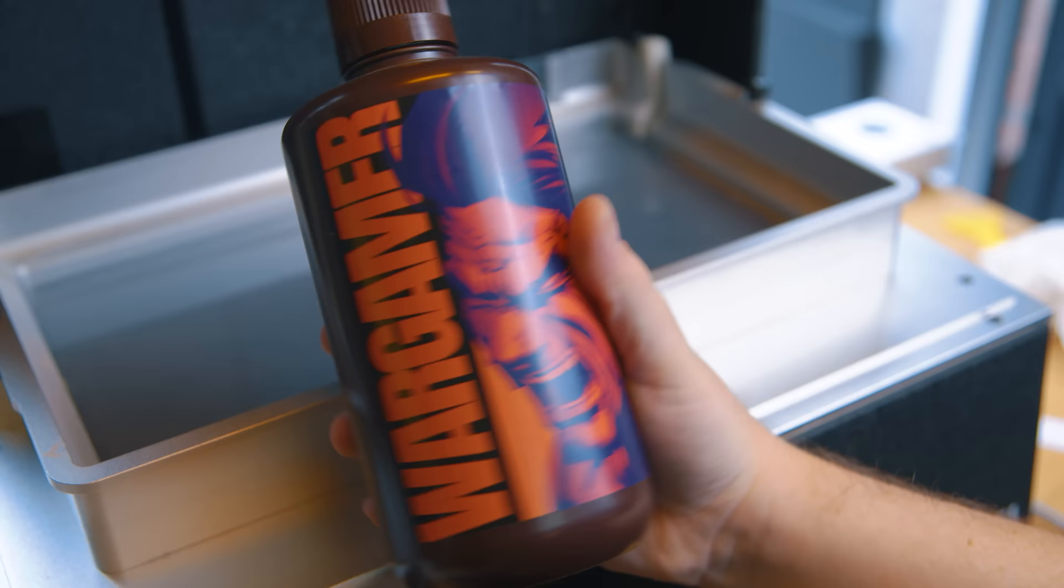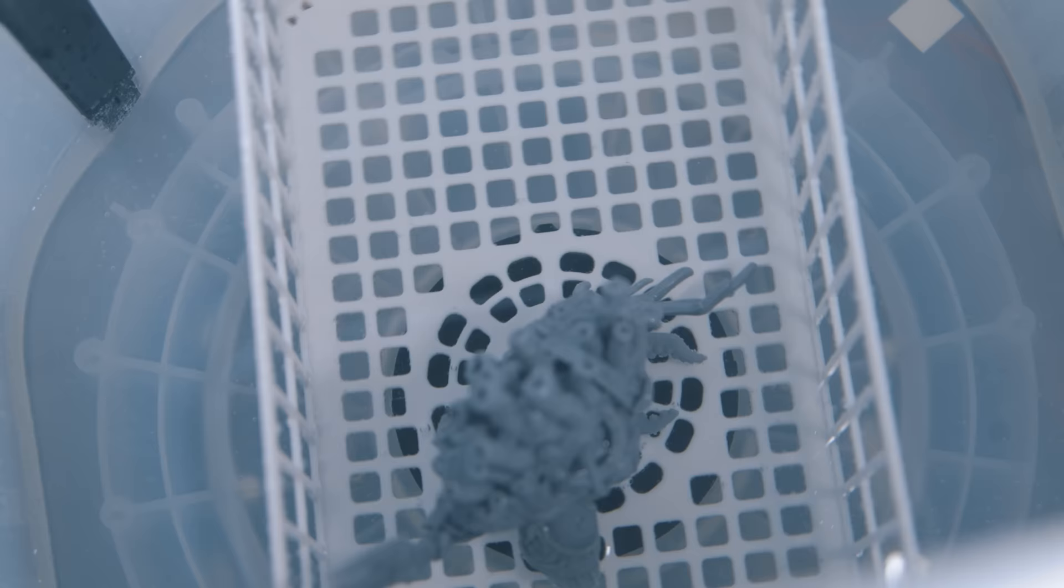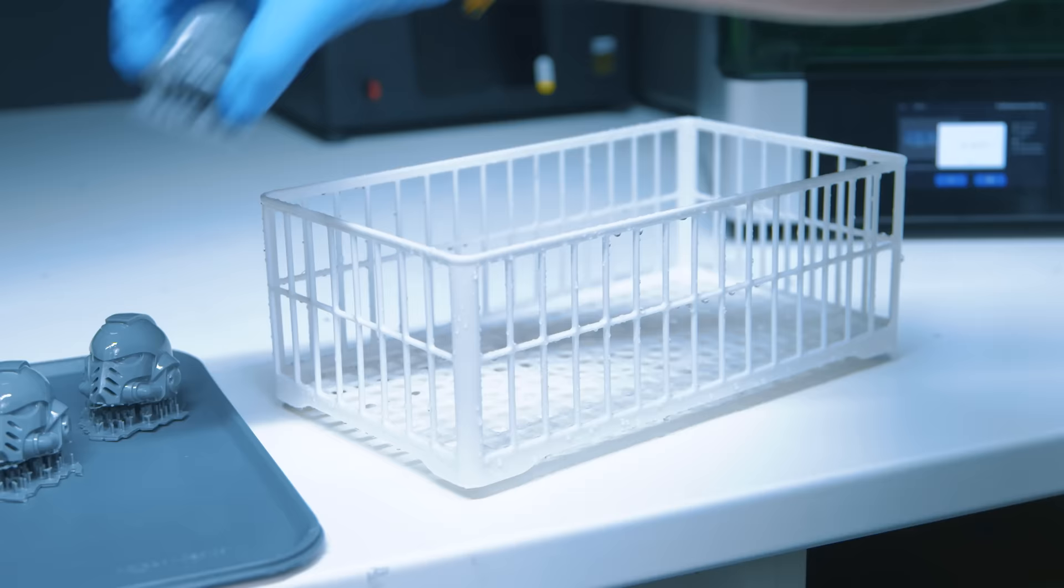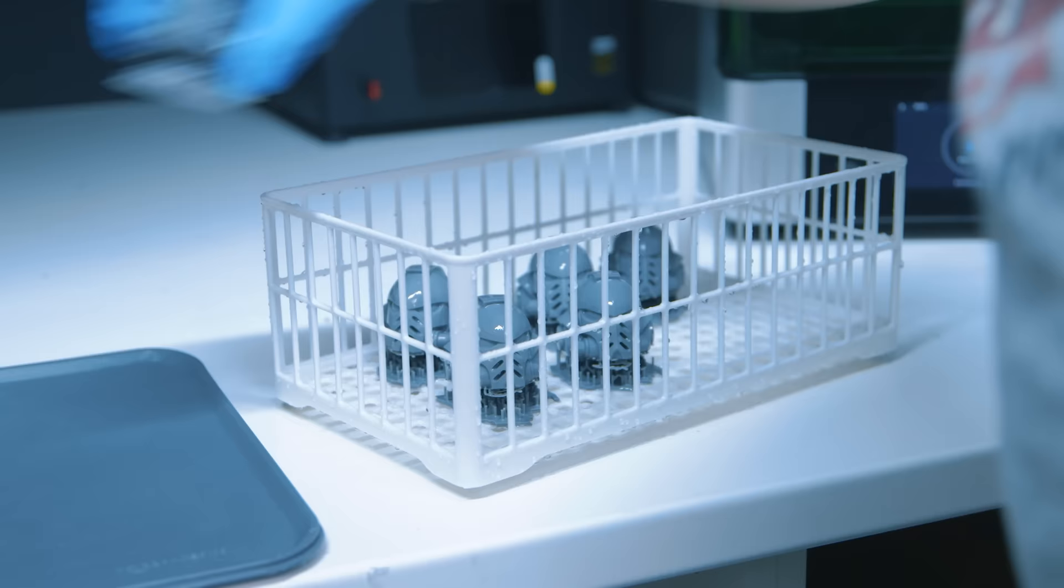When I say I loaded it up with water, well to be fair this was printed with Wargamer resin which is water washable anyway. Whilst water washable resins typically don't like being soaked for long periods because they turn brittle, this way of cleaning works really well. Instead of submerging parts, this is more like a dishwasher. The parts are loaded into a cage which just spins at the bottom of the unit.